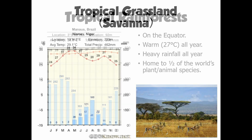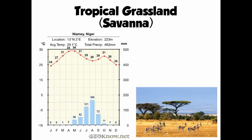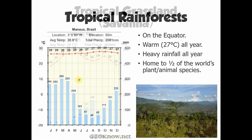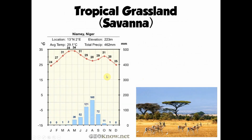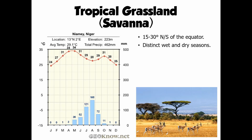Moving a little bit further away from the equator, we get to what we call tropical grasslands or savannah ecosystems. They have a slightly different climate, as you can see from the climate graph, because they're influenced by different factors. We find these ecosystems about 15 to 30 degrees north or south of the equator — so not on the equator itself. The thing that characterises these ecosystems the most is the distinct wet and dry seasons.